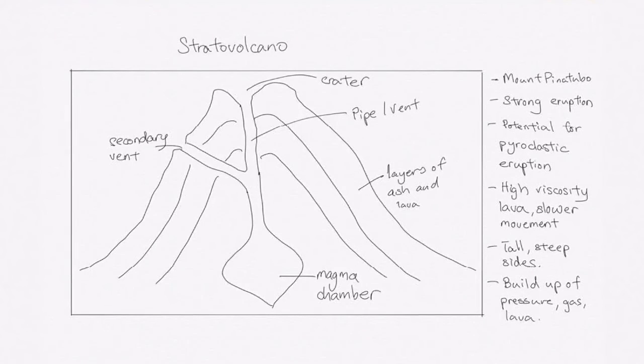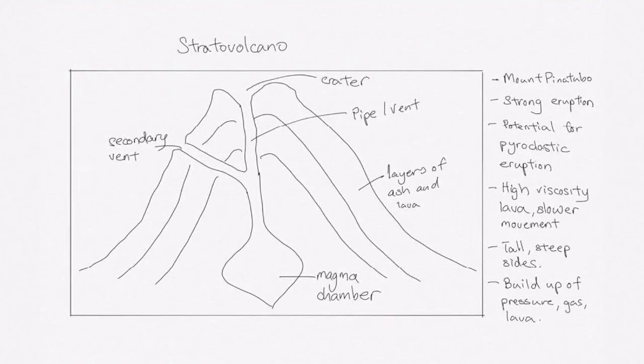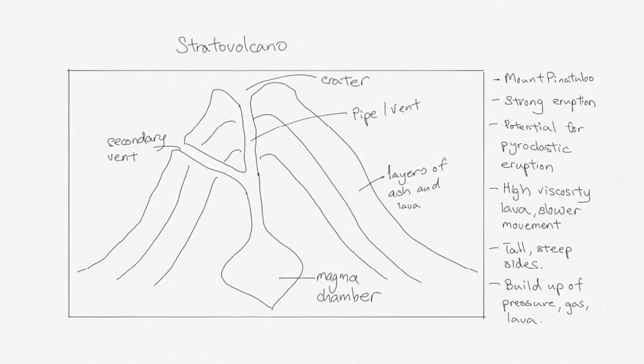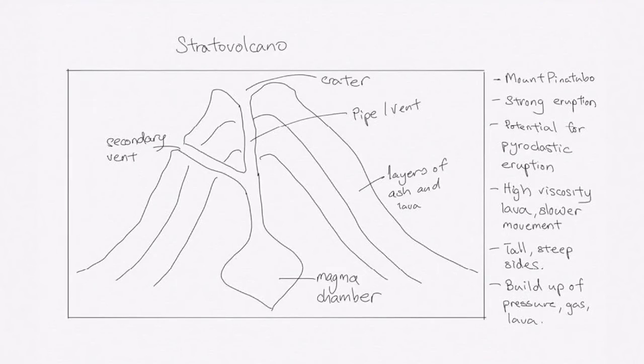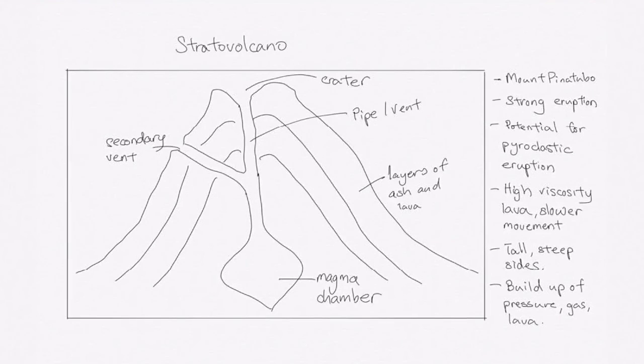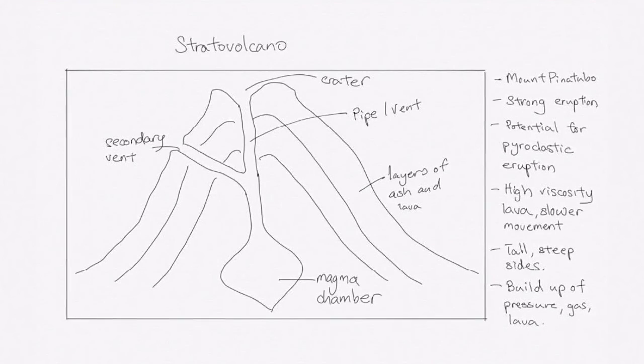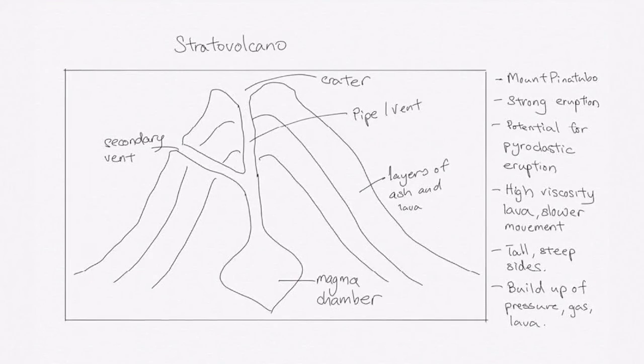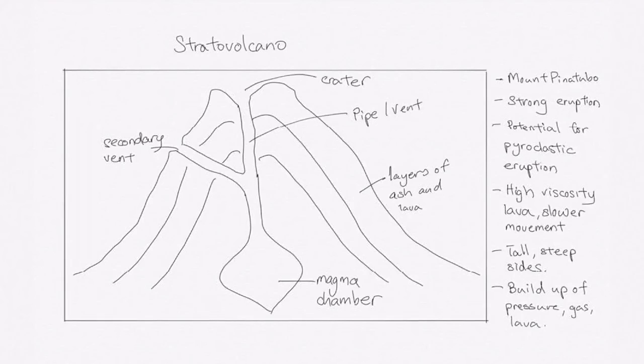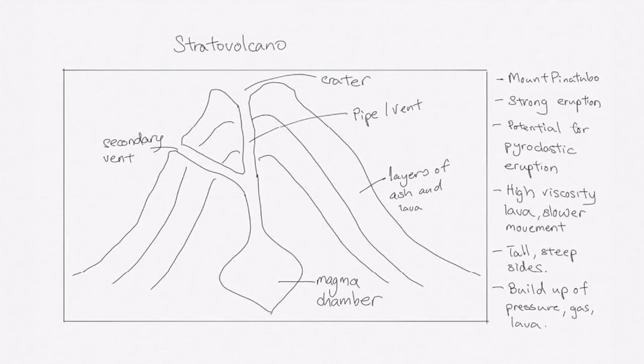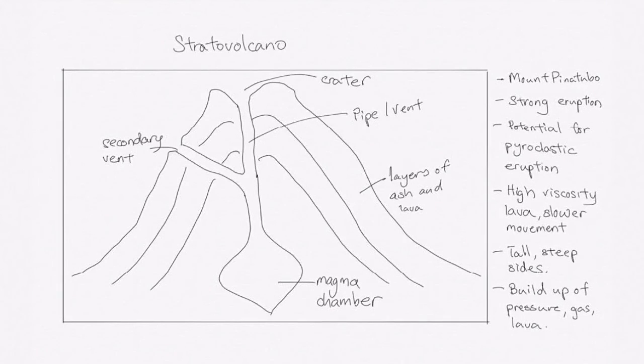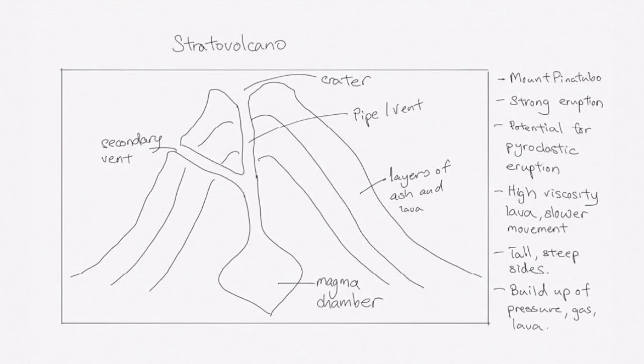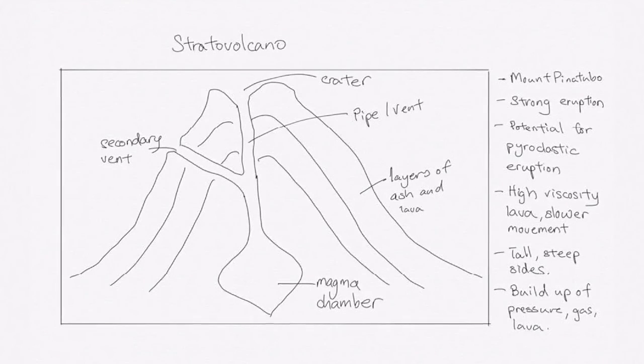The final landform in this video will be the Stratovolcano. For this, this is another type of volcano that is formed. Within the diagram itself, you have to have your title, your labeling on top. Include things like a secondary vent, your crater, your main vent or main pipe, and the layering of ash and lava. Also, try to include the magma chamber. Mount Pinatubo is an example of a Stratovolcano very near us in the Philippines.